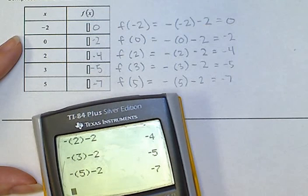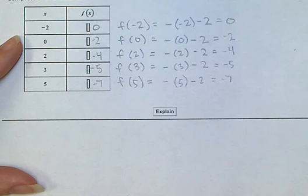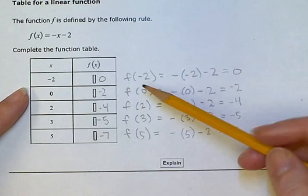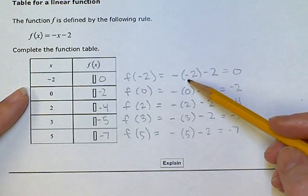So now my function table is complete. I have an answer in each of these spots. And I found it by putting the x values into the function. I kept the parentheses around them and put it wherever the x was.